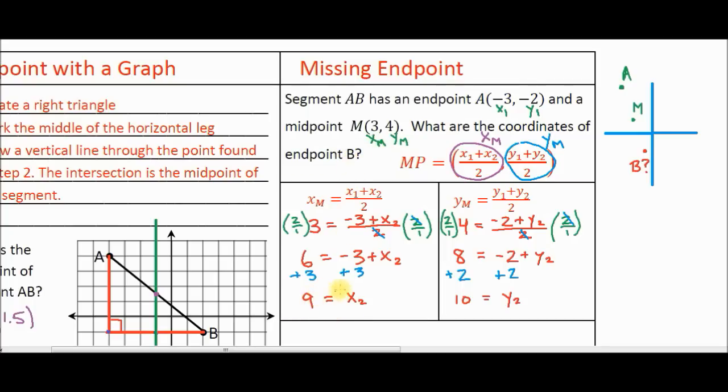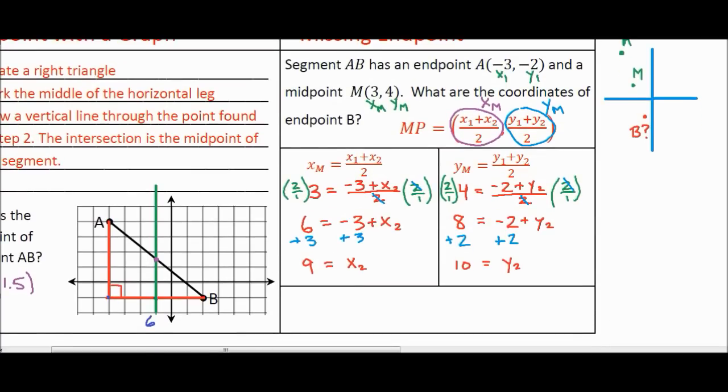So now we know the coordinates of endpoint B. The x value is 9, the y value is 10. So in our final answer, we can write the coordinates. The coordinate of point B is (9, 10), and we have now solved the missing endpoint of this particular problem.